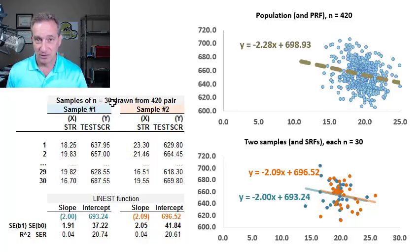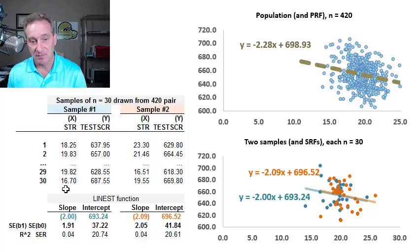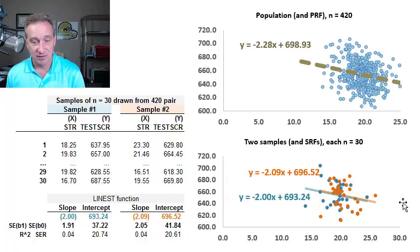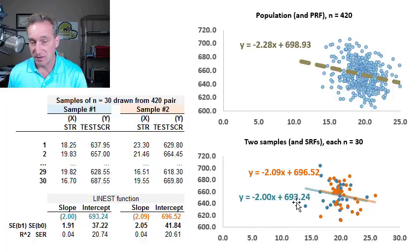I picked 30 because it's right on the border between a small and a large sample — typically a large sample starts at 30. I have 30 rows of data, though I've collapsed them to keep the screen manageable, showing rows 1, 2, skipping 3 to 28, then 29 to 30. So I have 30 pairs of observations drawn as a random sample from the population — one in blue and another in orange.